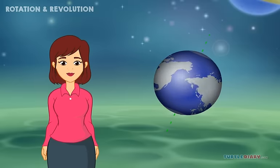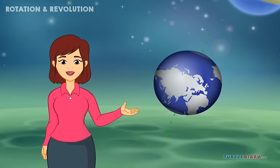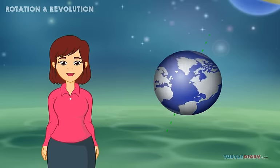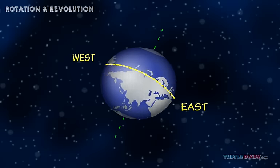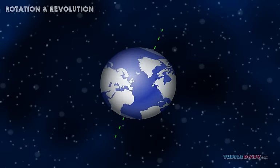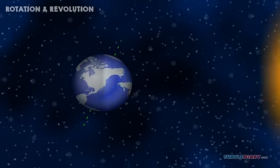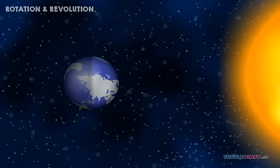Days and nights happen because of the Earth's rotation. The Earth spins around from west to east. As it spins, one side of it faces the Sun. The other side faces away from the Sun.